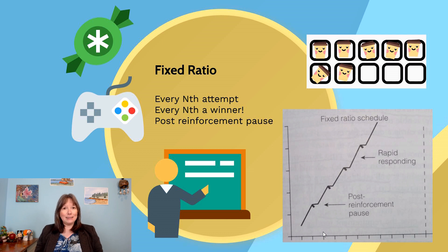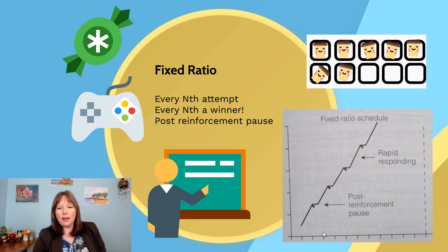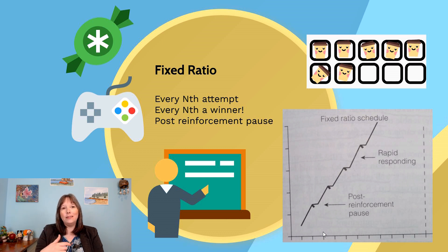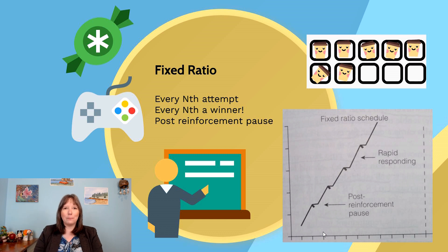Because of fixed ratio schedules, we tend to see differences in behavior — you're more likely to make purchases as you get closer to completing a loyalty card. The graph shows rapid responding with a brief post-reinforcement pause. Rats in Skinner's operant conditioning chamber that had to press a lever 10 times for a food pellet would quickly press 1 through 10, get the pellet, pause, then repeat. Fixed ratio schedules are predictable and we learn them quickly.